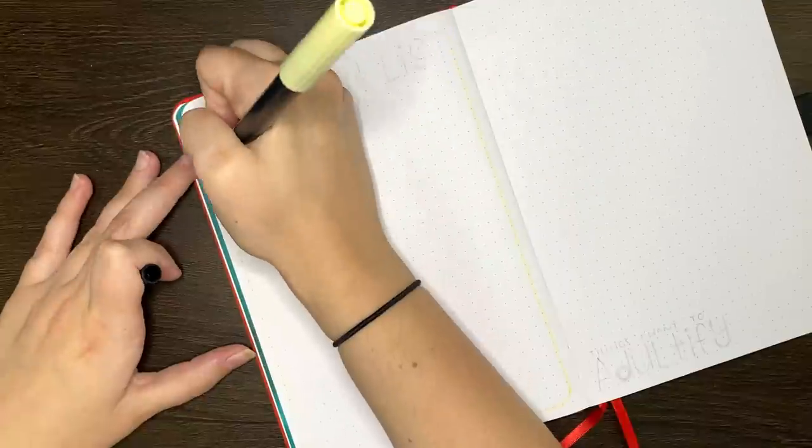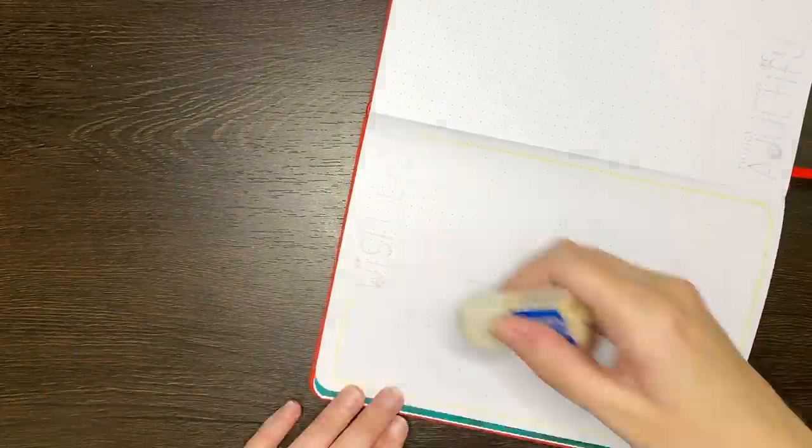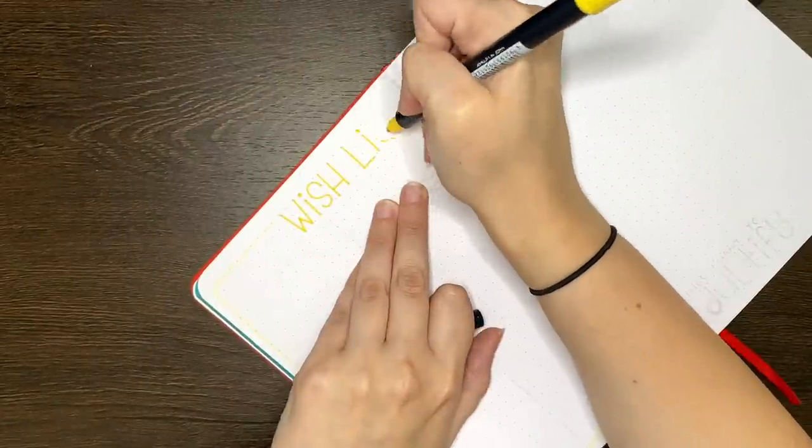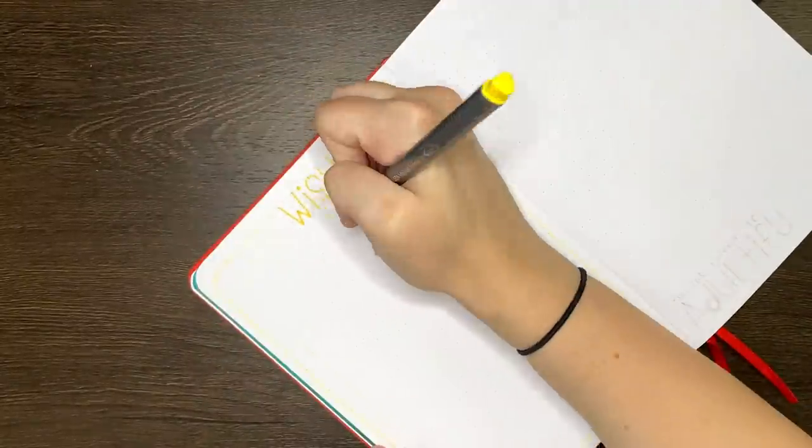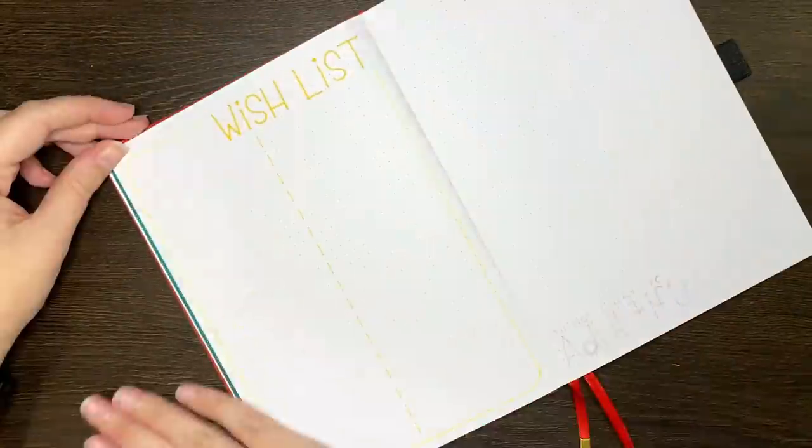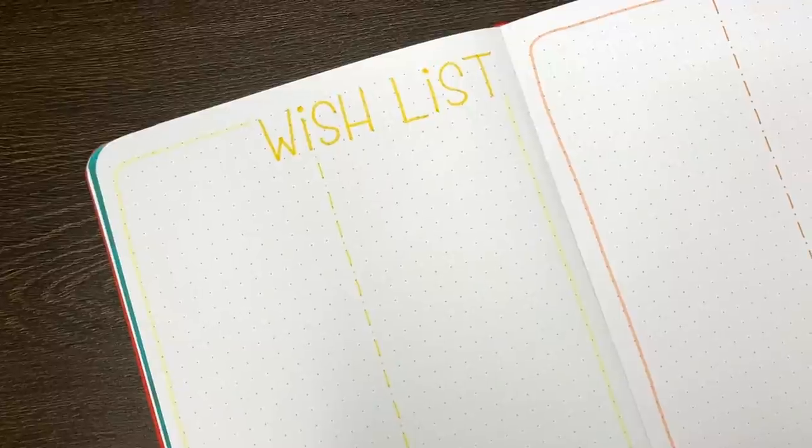Flipping over though, we are onto my wishlist page and my things to adultify page. These ones I wanted to have together because they are quite related to each other. The way that I differentiate between them is that my wishlist is really for anything that I want, whereas my things I want to adultify page is more for things that I want to get a more updated or adult version of.